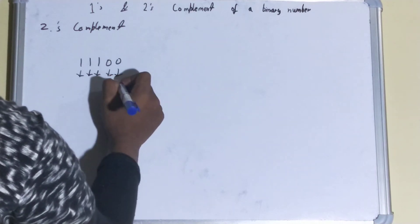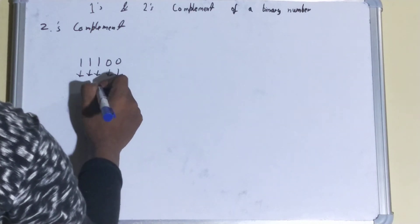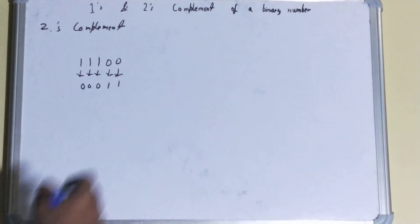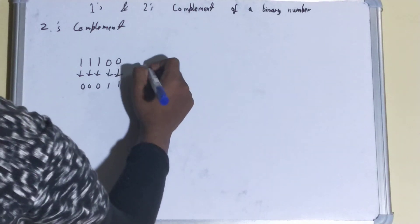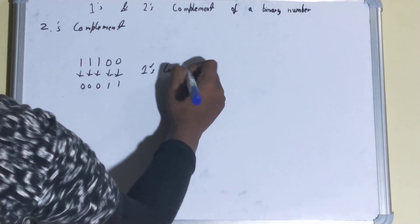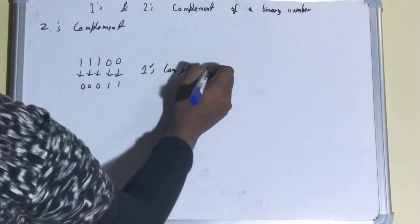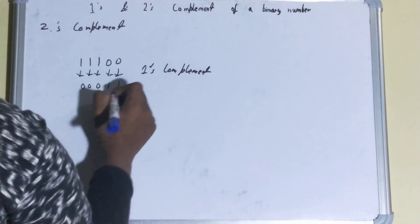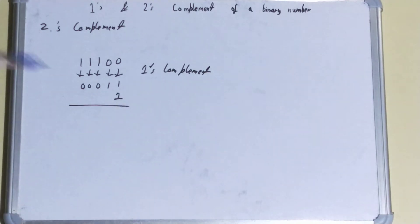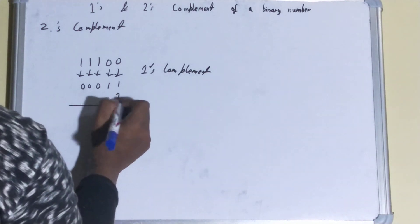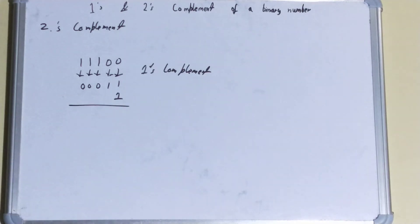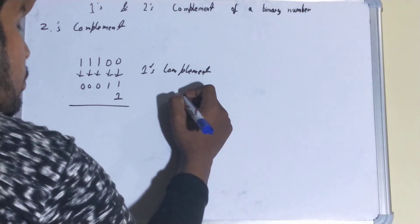All your zeros become ones and all your ones become zeros. Once you have the ones complement, you just need to add 1 to it. That's it — add 1 to the ones complement to get the twos complement.